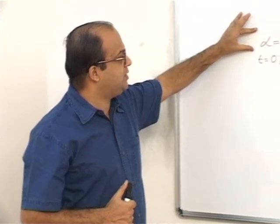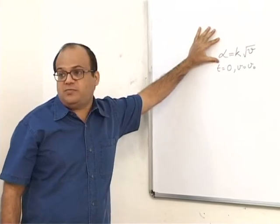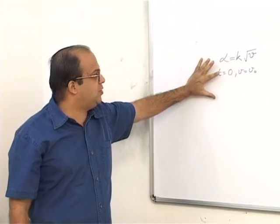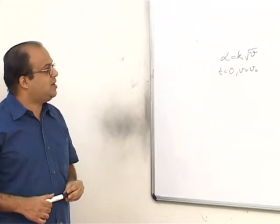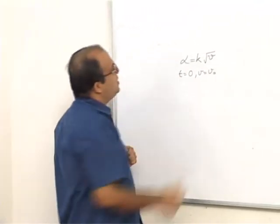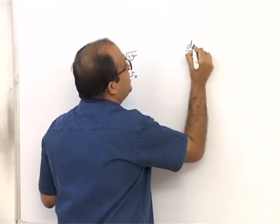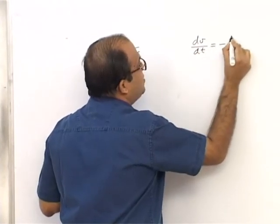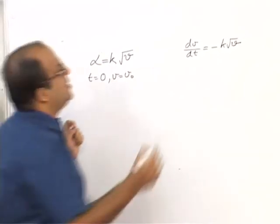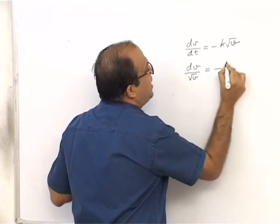Very simple. Particle is moving with a deceleration alpha equal to k root v. Where k is a positive constant. At time t equal to 0, the velocity is v0. After what time and distance will the particle come to rest? So deceleration is k root v. So acceleration which is dv/dt, that would become minus k root v.